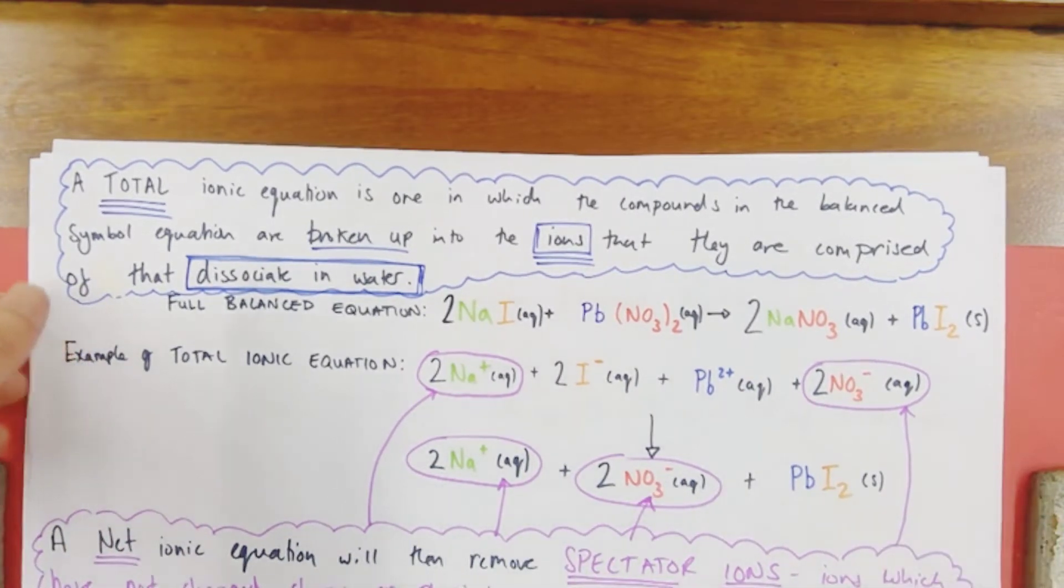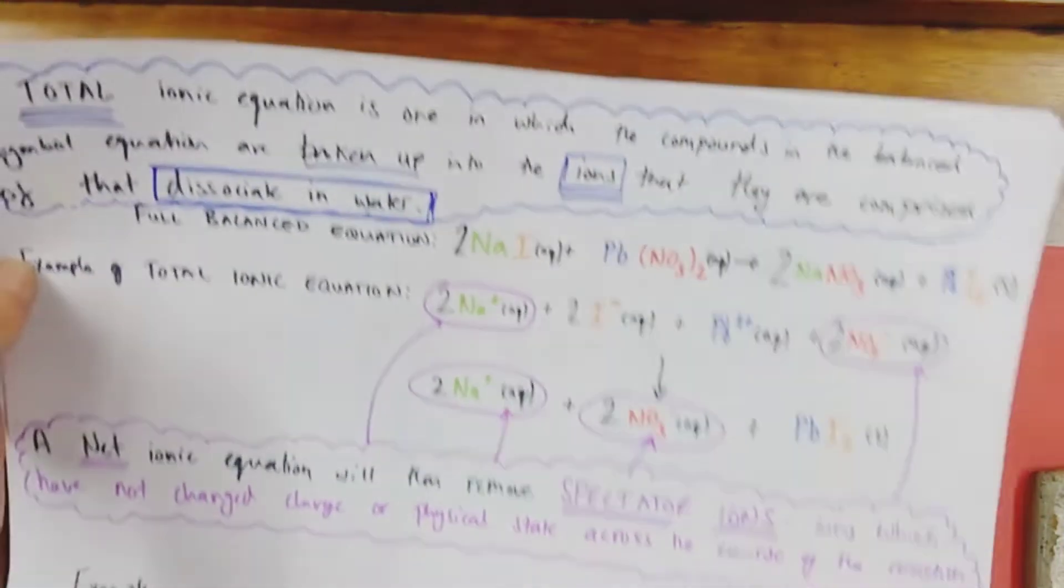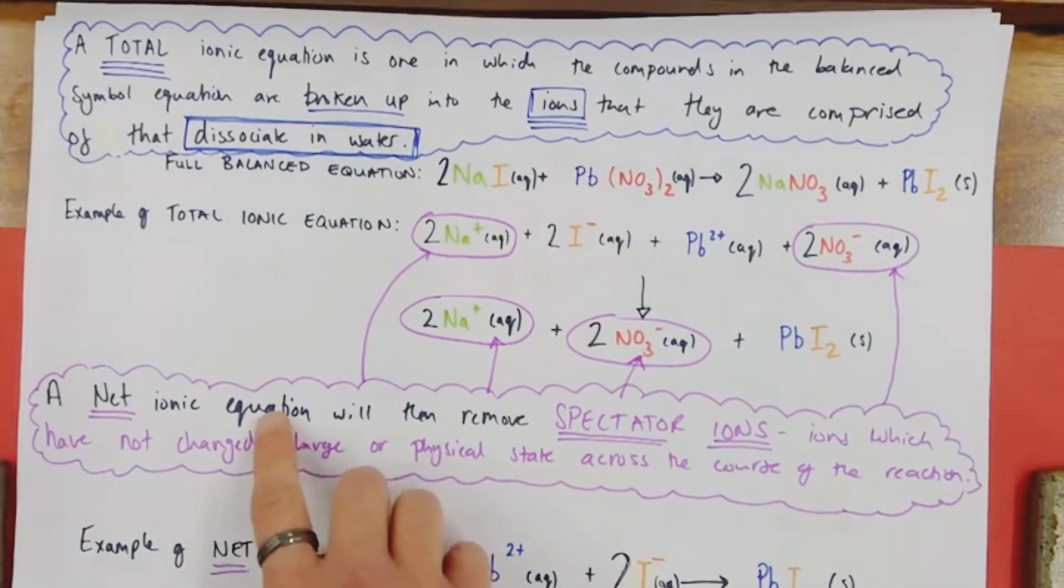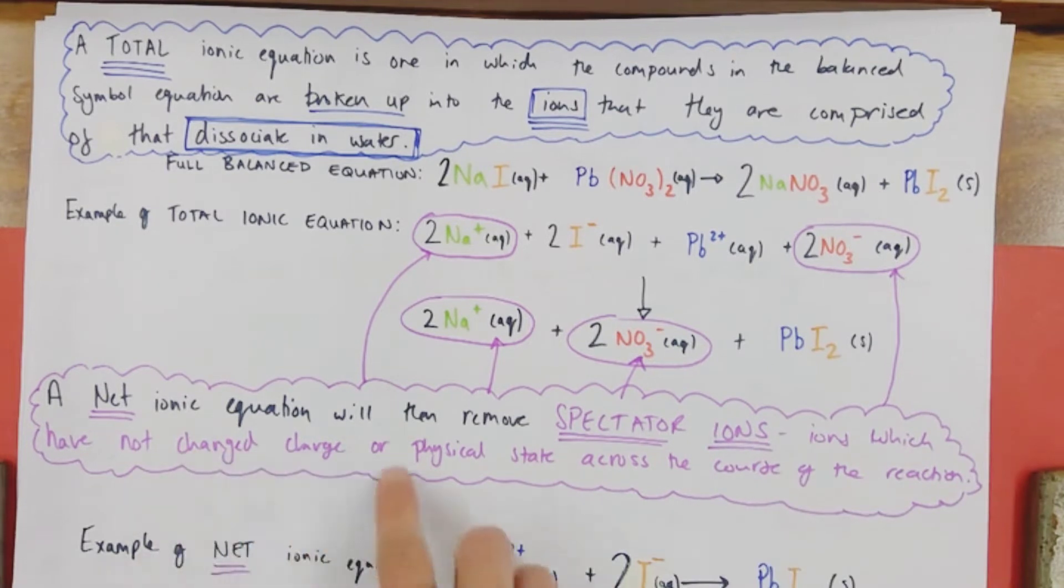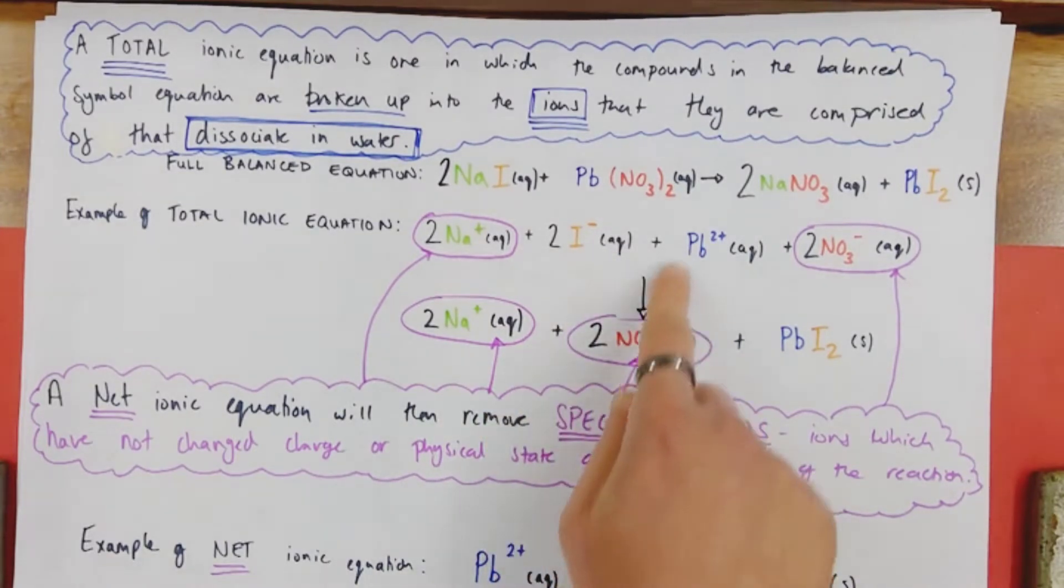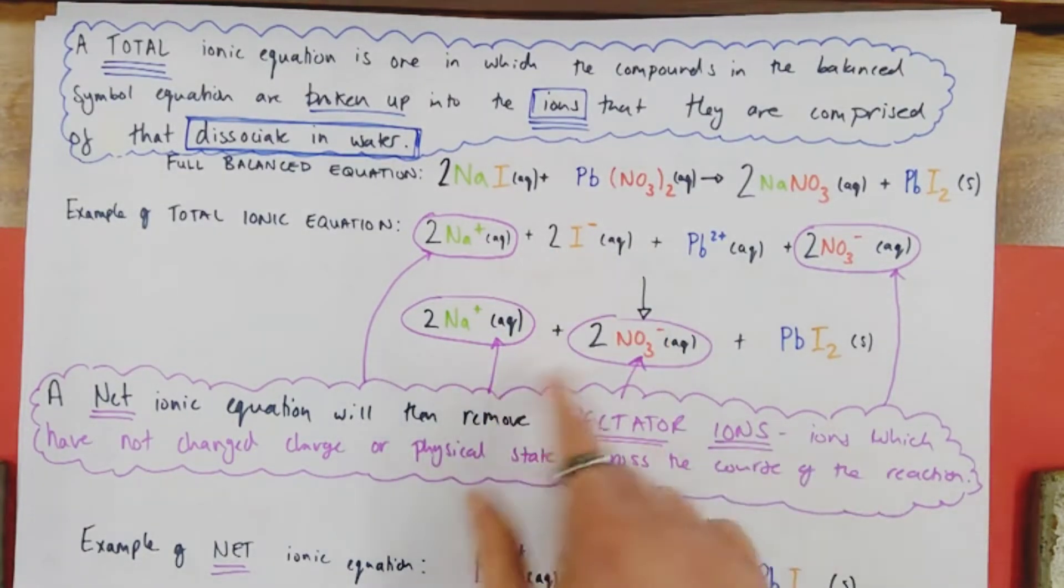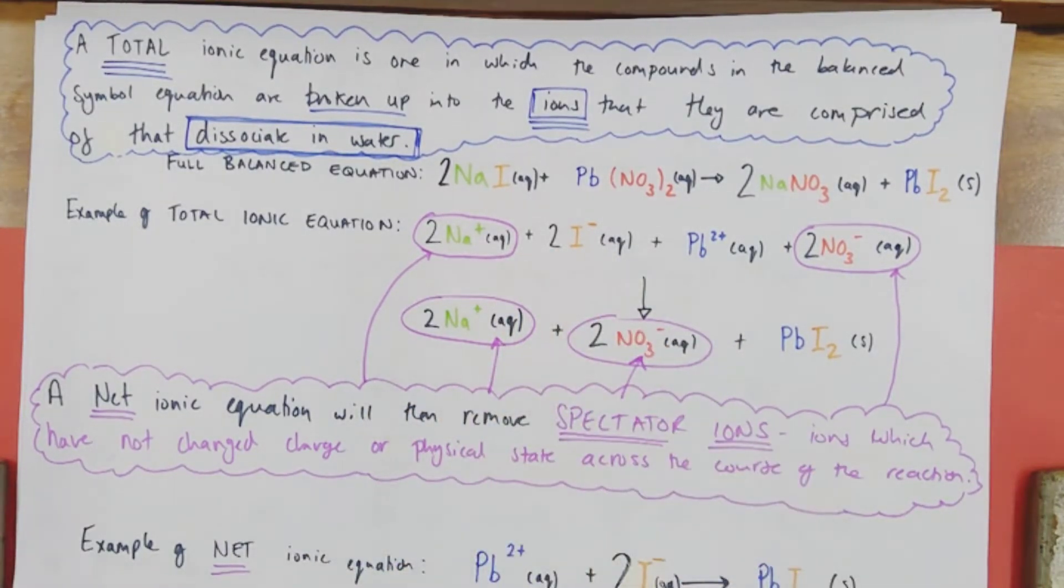Then I try and simplify this to a net ionic equation. And what that does is it removes any spectator ions. These are ions which have not changed charge or physical state across the course of the reaction. Ions that have been spectating, that have been not changing, just watching almost what's going on around them throughout the course of the chemical reaction. If you look across the two sides of this equation, you can hopefully spot the ones that haven't done anything.